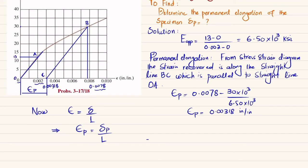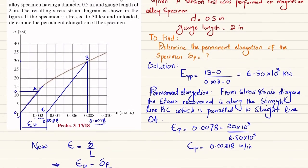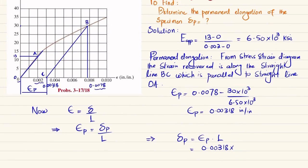We are interested to find out the permanent elongation. So permanent elongation is equal to permanent strain times the original length. The permanent strain is 0.00318 and the original length or gauge length is 2 inches.